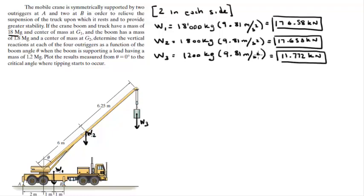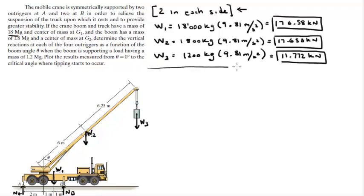We've got the three weights. Now you just have to slow down and think about this a little. We have two normals: the normal at A and the normal at B. A quick note: since there are two supports on each side, the normal at each point is going to be half of what I draw. So half the normal at A is the reaction at each of the supports at A, and half the normal at B is the reaction at each support at B. But for now I'm going to find the normal at A and the normal at B to keep it simpler.